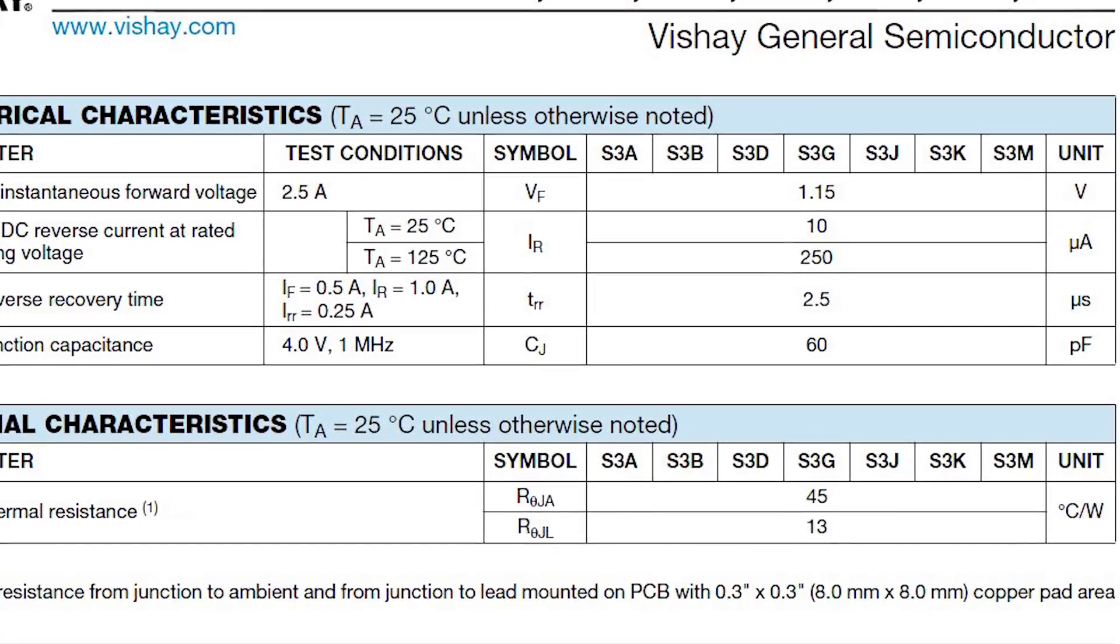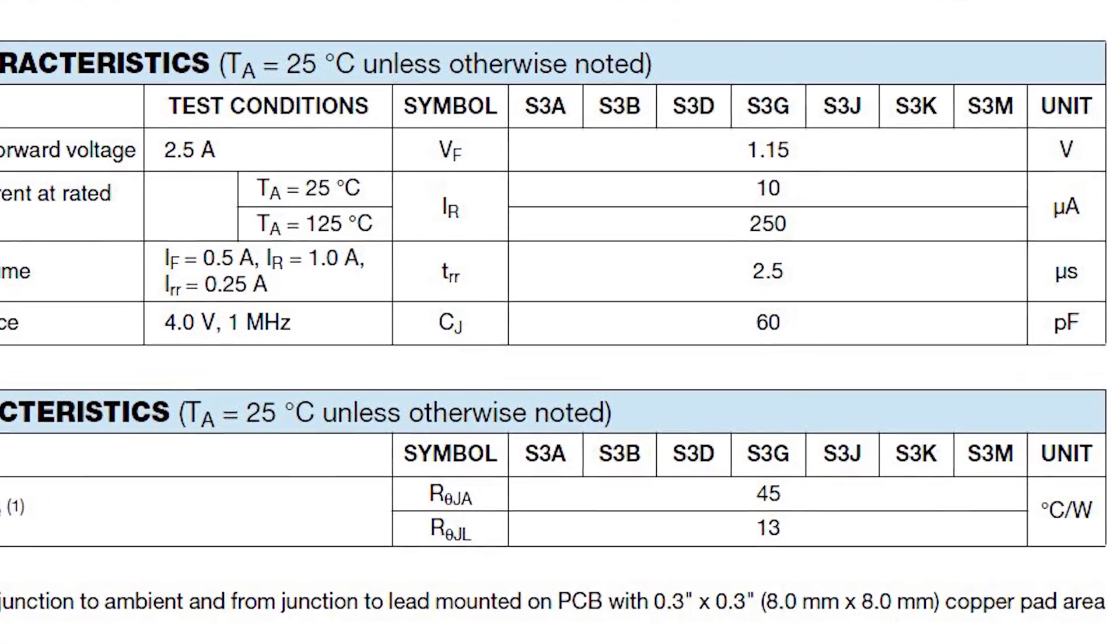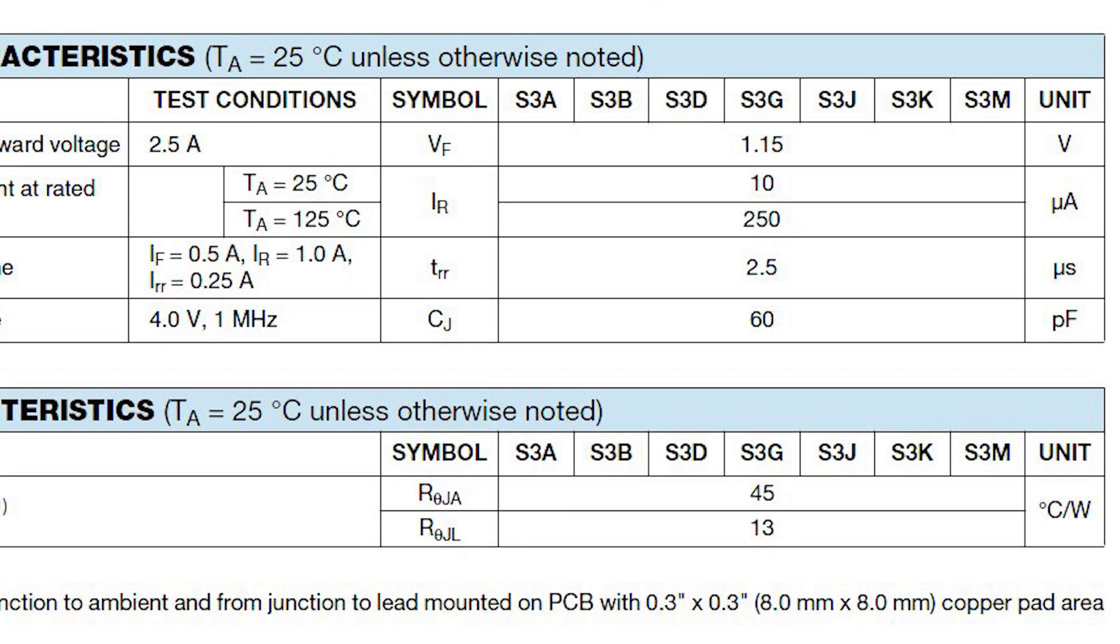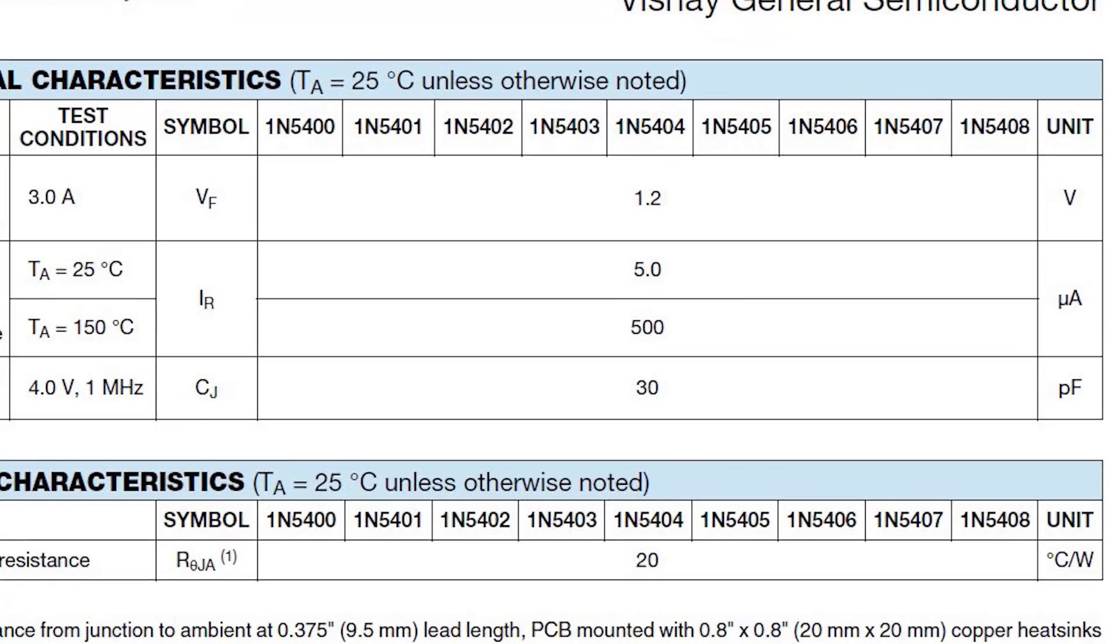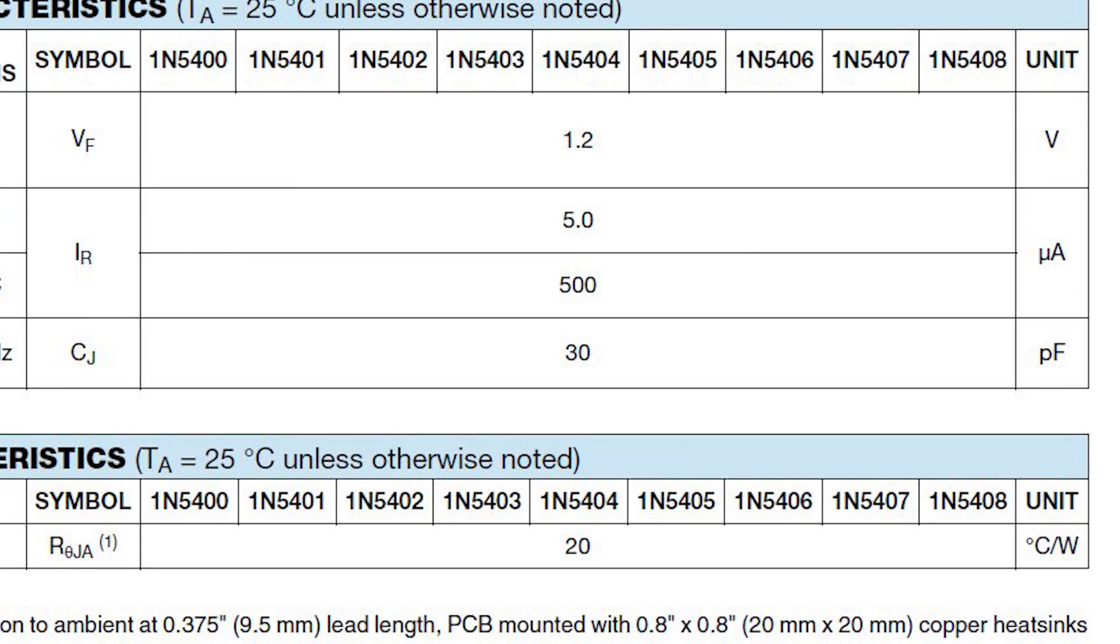These diodes also have a much lower thermal resistance. The S3G diodes have a value of 45 degrees per watt, while the 5404s have only 20 degrees per watt, which means that my new diodes will not run as hot as the stock ones.